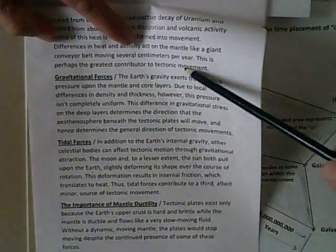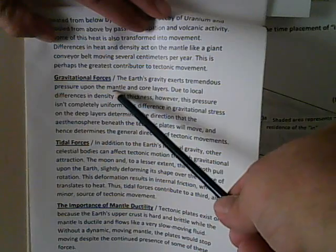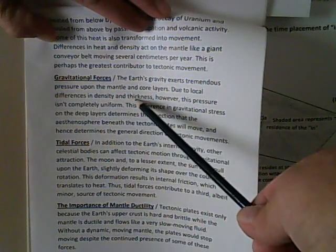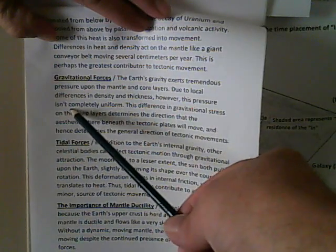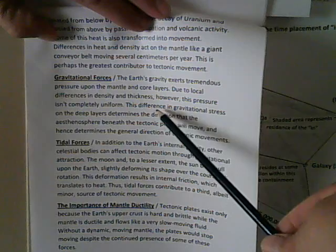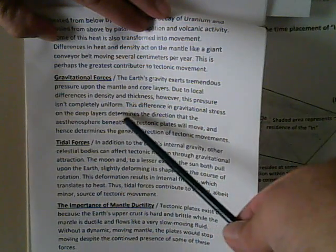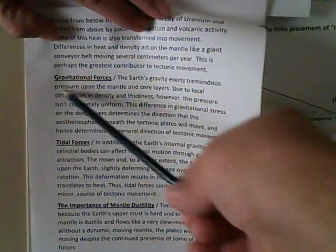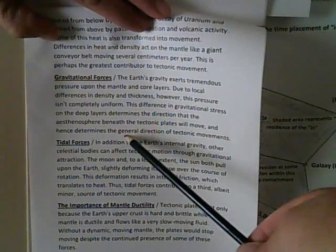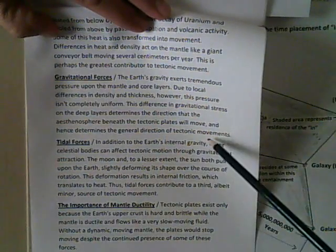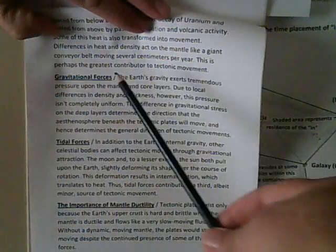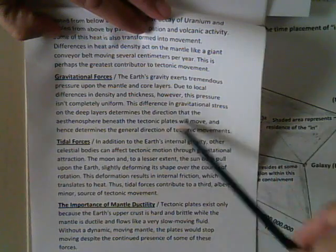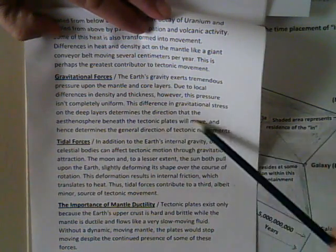Gravitational forces — the Earth's gravity exerts tremendous pressure upon the mantle and core layers due to local differences in density and thickness. However, this pressure isn't completely uniform. This difference in gravitational stress on the deep layers determines the direction that the asthenosphere beneath the tectonic plates will move. Gravity is the main controlling force here, and hence determines the general direction of tectonic movements. Remember: anything that affects gravity has a tremendous effect on our tectonic movements and the movements within the subterranean surfaces.